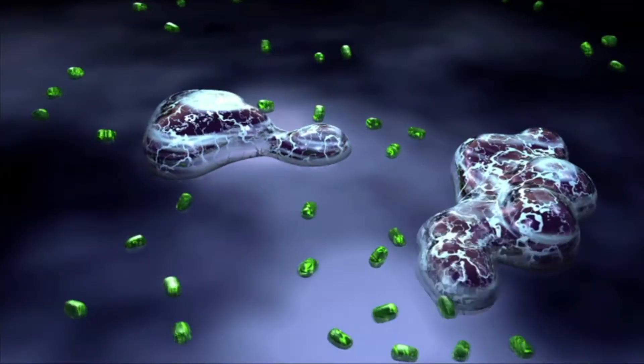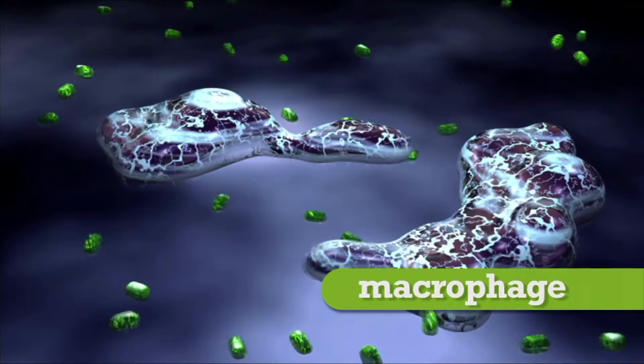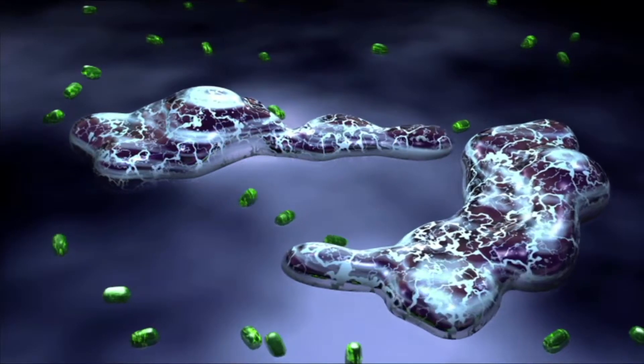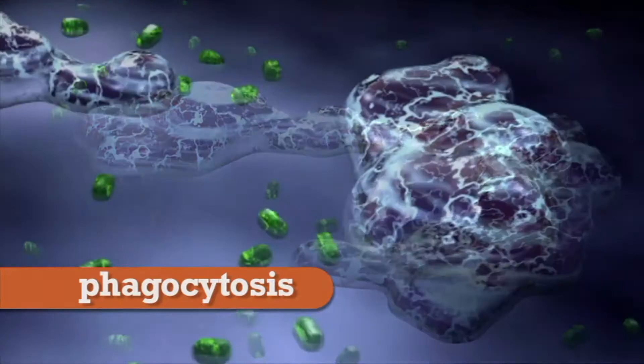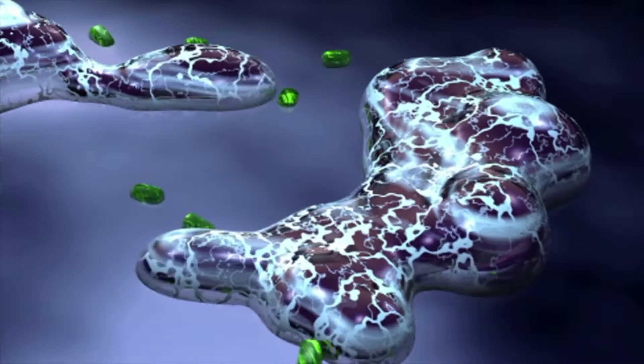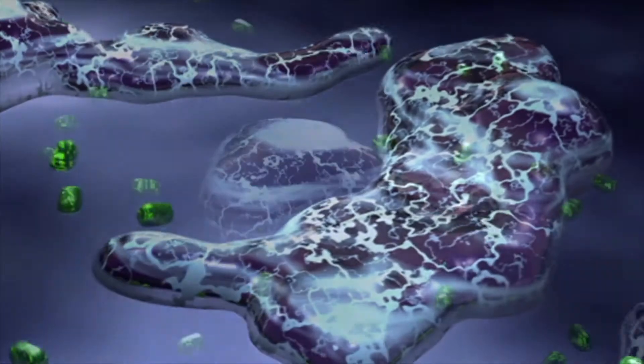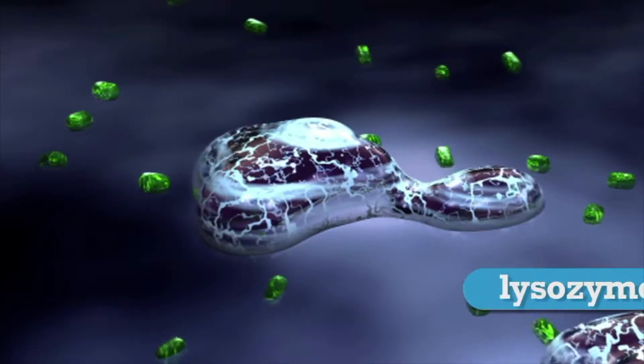Some white blood cells, called macrophages, destroy invading pathogens through a process called phagocytosis. Phagocytosis is the process of engulfing a solid particle. Macrophages engulf the invading organism. Once drawn into the macrophage, enzymes such as lysozyme kill the pathogen.